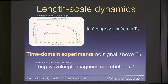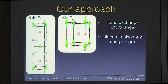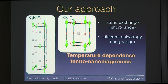We want to address this point with a simple strategy. We compare two samples: the cubic KNiF₃ and the tetragonal system K₂NiF₄. The key comparison: short-wavelength magnons are essentially the same in both — the superexchange pattern is the same, differing only in the number of nearest neighbors (six for cubic, four for tetragonal). But long-wavelength magnons are very different: one has very weak magnetocrystalline cubic anisotropy, the other has rather strong uniaxial anisotropy. The idea is to measure the temperature dependence of both. If there is any softening and it differs between the two compounds, that would indicate long-wavelength magnon involvement.